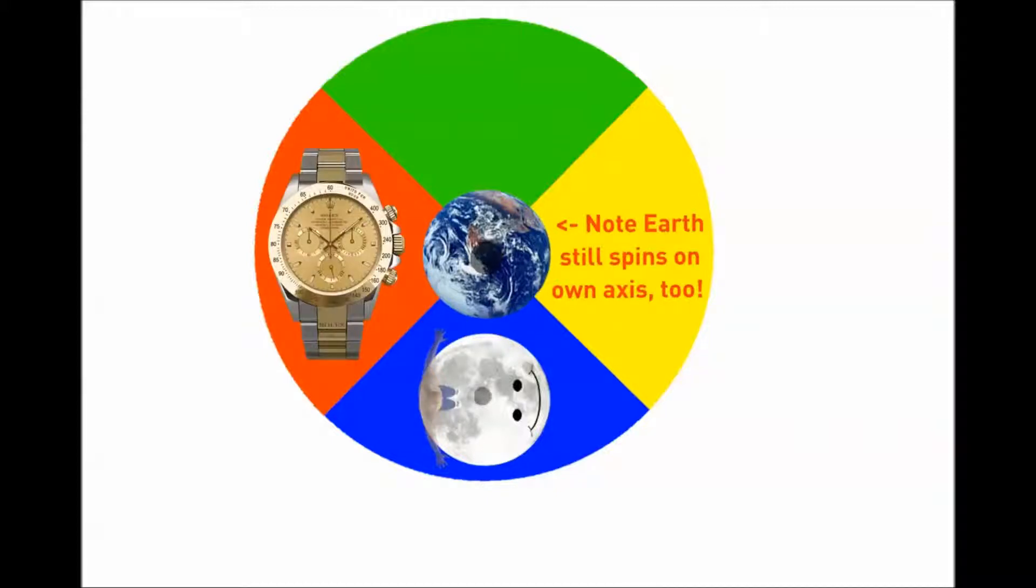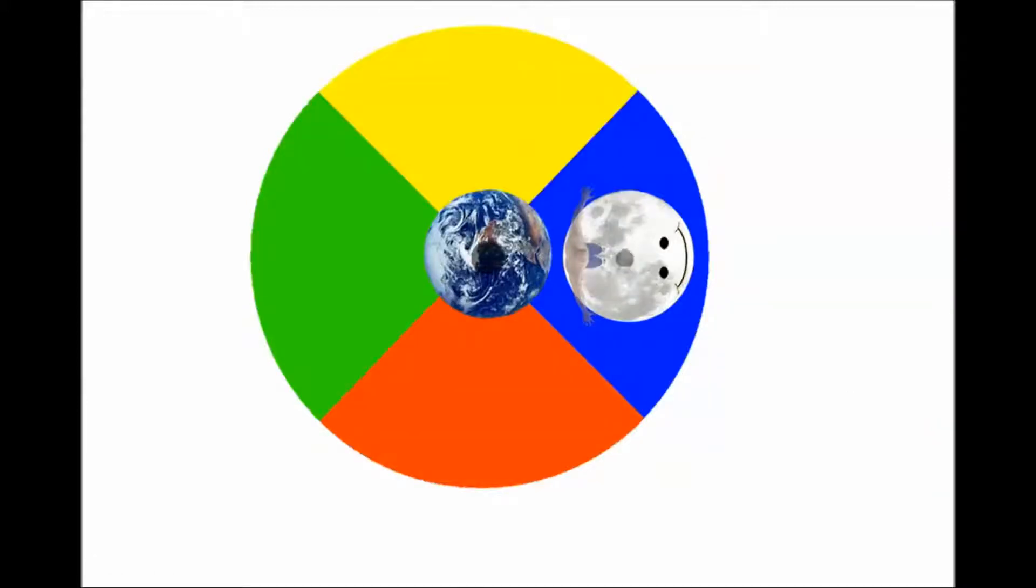Now here we've got the center axis, and around it there are three different things rotating, all at different rates, but all upon the same center axis. So around and around Goro goes.